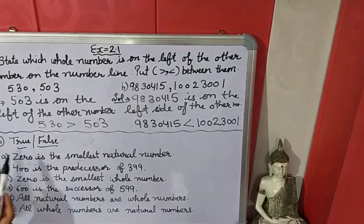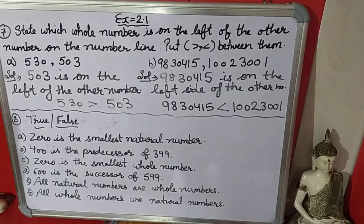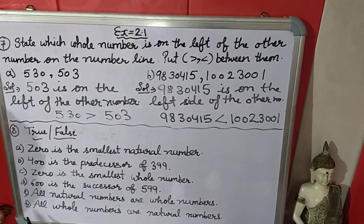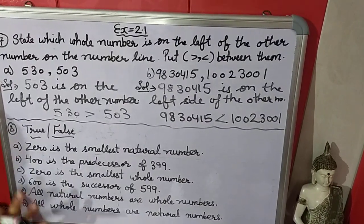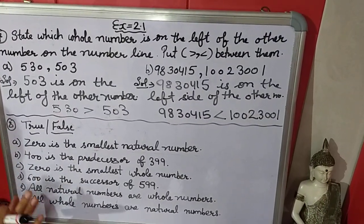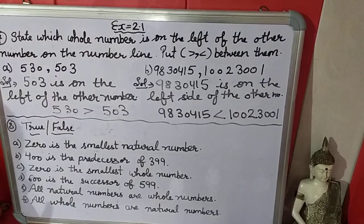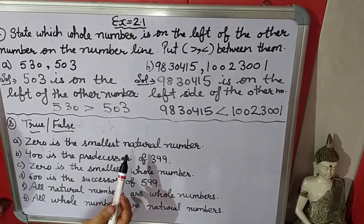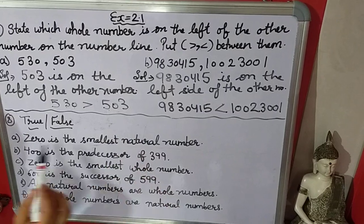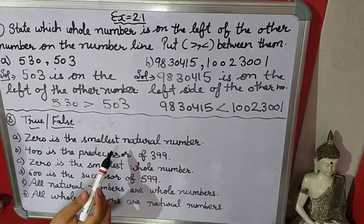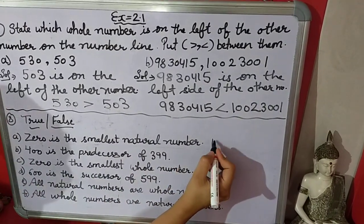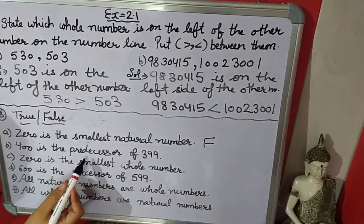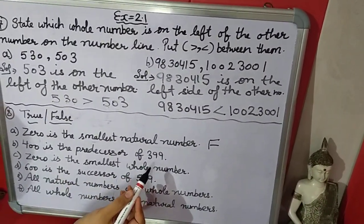Now come to the 8th question: True or False. First: 0 is the smallest natural number. We discussed the properties of whole numbers and natural numbers in the last module. Natural numbers start with 1 only; 0 does not come in natural numbers. So this is false. Next: 400 is the predecessor of 399. Predecessor means minus 1.